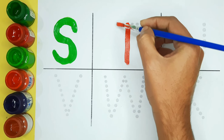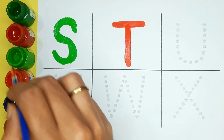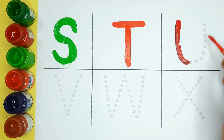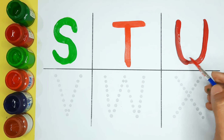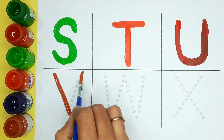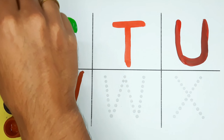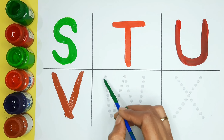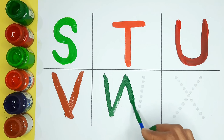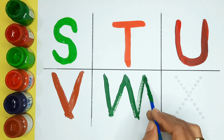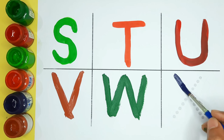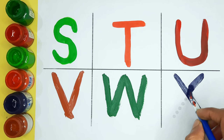T is for tiger. Red color — U is for umbrella. Brown color — B is for bear. Green color. Blue color — W is for watermelon, W is for window. Blue color — X is for x-ray.